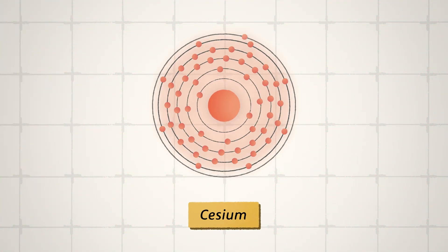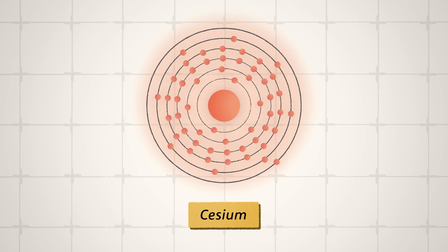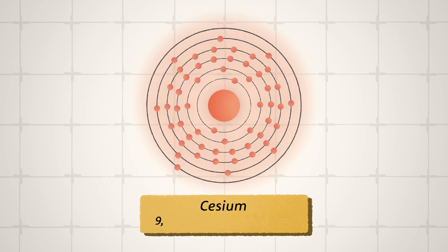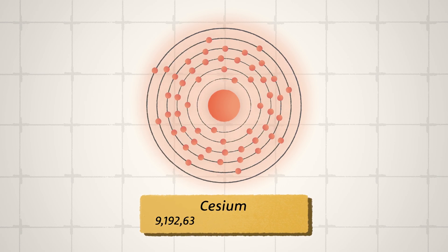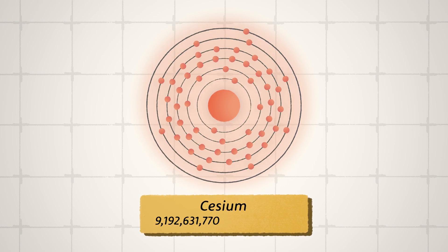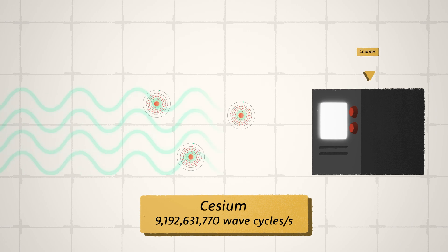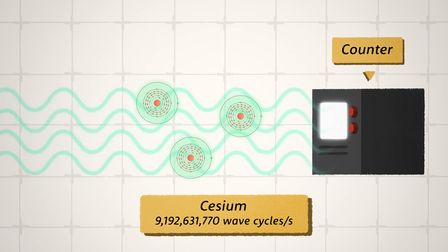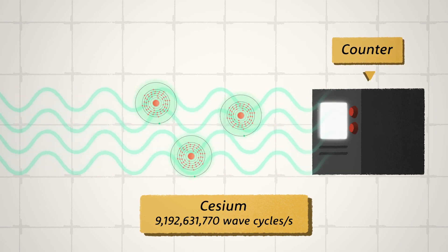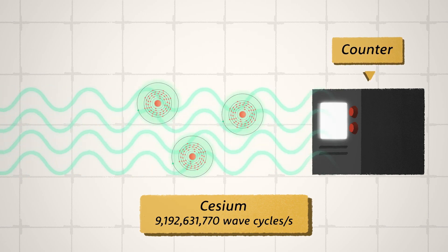Cesium, the atom we use to define the official second, has a resonant frequency of exactly 9,192,631,770 wave cycles per second. One second then equals the time it takes for that many peaks of light waves tuned to the cesium resonant frequency to be counted.